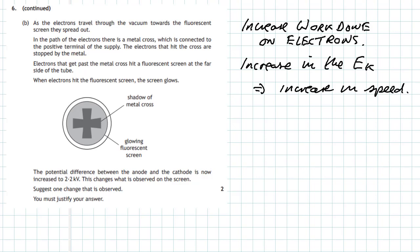It's going to carry more energy. So when the electrons pass by the metal cross and hit the fluorescent screen you'll get a larger glow because the electrons are having more energy. You can write that down and justify it as above.